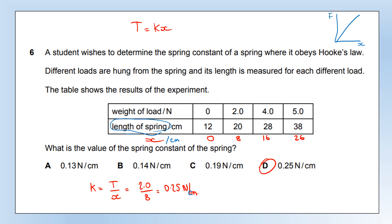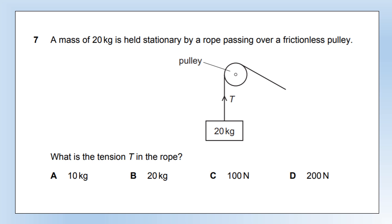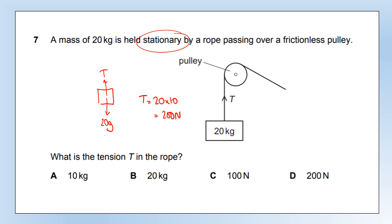A mass of 20 kilograms is held stationary by a rope passing over a frictionless pulley. What is the tension? The fact that it's stationary tells us tension and the weight force must be equal. So tension equals the weight of the object: 20 times 10 gives 200 newtons.